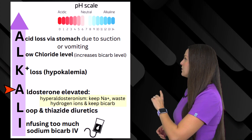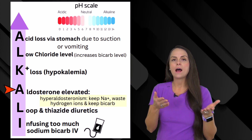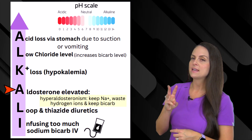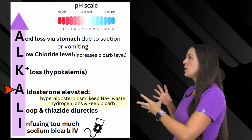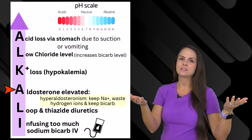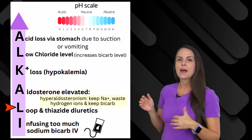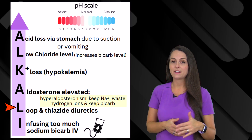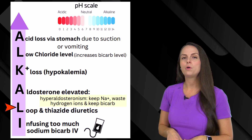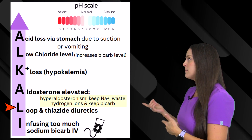Then we have A for aldosterone increase. Whenever we have a condition like hyperaldosteronism with a high level of aldosterone, it's going to do three things: it causes our body to keep sodium, which causes us to waste more hydrogen ions, raises our blood pH, and keep bicarb. And then we have L for loop and thiazide diuretics. These diuretics increase urinary output, and in that urine will be potassium — so we're at risk for hypokalemia.